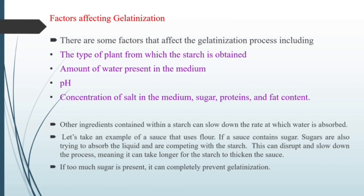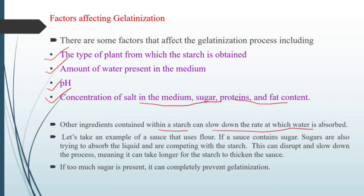There are some factors involved in gelatinization: the type of plant from which the starch is obtained, the amount of water present in the medium, pH, and the concentration of salt, sugar, protein, and fat. Any other ingredient present within a starch system can affect the gelatinization process — for example, it may slow down the rate at which water is absorbed. For instance, in a pasta sauce using flour as a base, if the sauce contains sugar, that sugar will compete with the starch for liquid, slowing down the process and making it take longer for the starch to thicken the sauce. Adding too much sugar can completely prevent gelatinization.